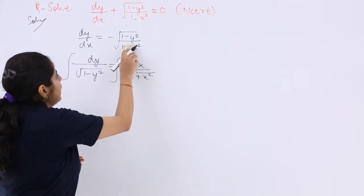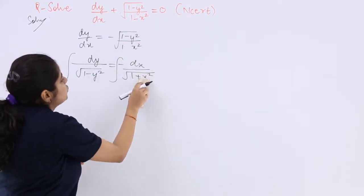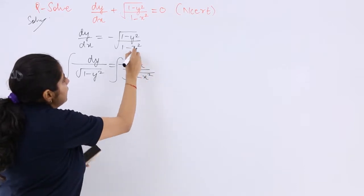There was a mistake. This is not 1 plus x square but 1 minus y square. See the question? So it is 1 minus y square. Sorry, 1 minus x square.